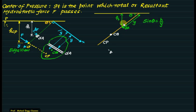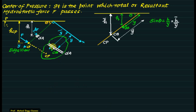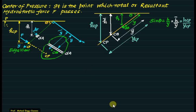The projection shows that area dA is at distance y and depth h. From the right-angle triangle, we can write sin(theta) = h / y. Similarly, for the center of gravity at distance y-bar with corresponding depth h-bar, sin(theta) = h-bar / y-bar. The center of pressure is at distance y_cp with corresponding depth s_cp, so again sin(theta) = s_cp / y_cp.